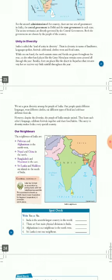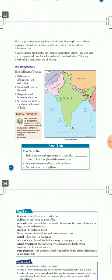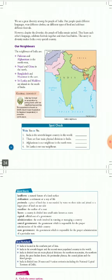Next, neighbors: Pakistan and Afghanistan are our north-west neighbors. Nepal and China are to the north. Bangladesh and Myanmar are to the east. Sri Lanka and Maldives are islands in the south of India. Thank you, that's all for chapter 3.